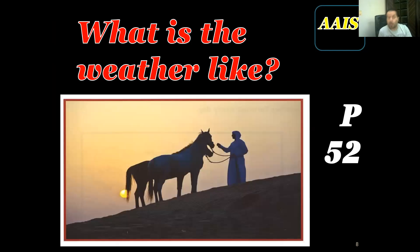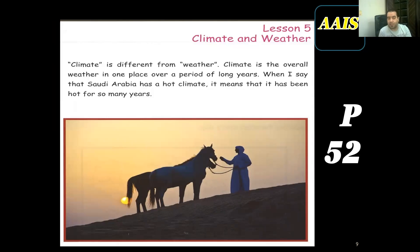Now we go to page 52. Here what's the weather like? It's maybe warm, maybe hot. I see some desert. Here we're differentiating between the word climate and weather. Climate, as they write, is the overall weather in one place over a longer period of time. This is the main difference: for a longer period of time.